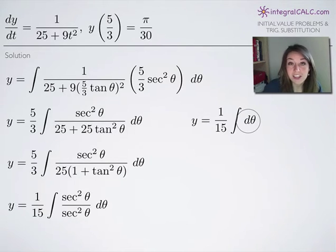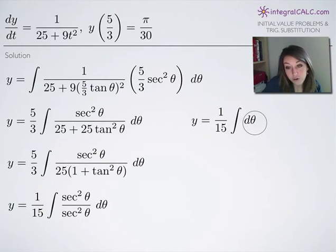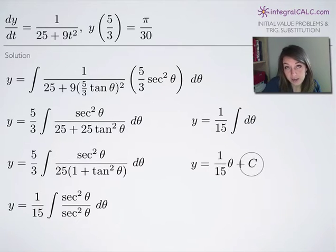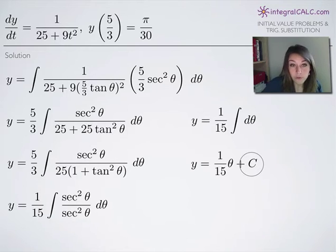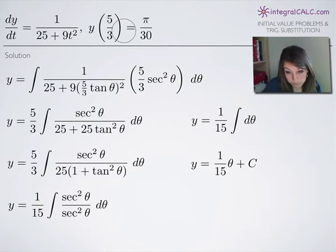Just as the integral of dy is y, and the integral of dt is t, taking the integral of dθ gives us θ. So we have y = (1/15)θ + C. That constant of integration C is what we'll use our initial condition to solve for.